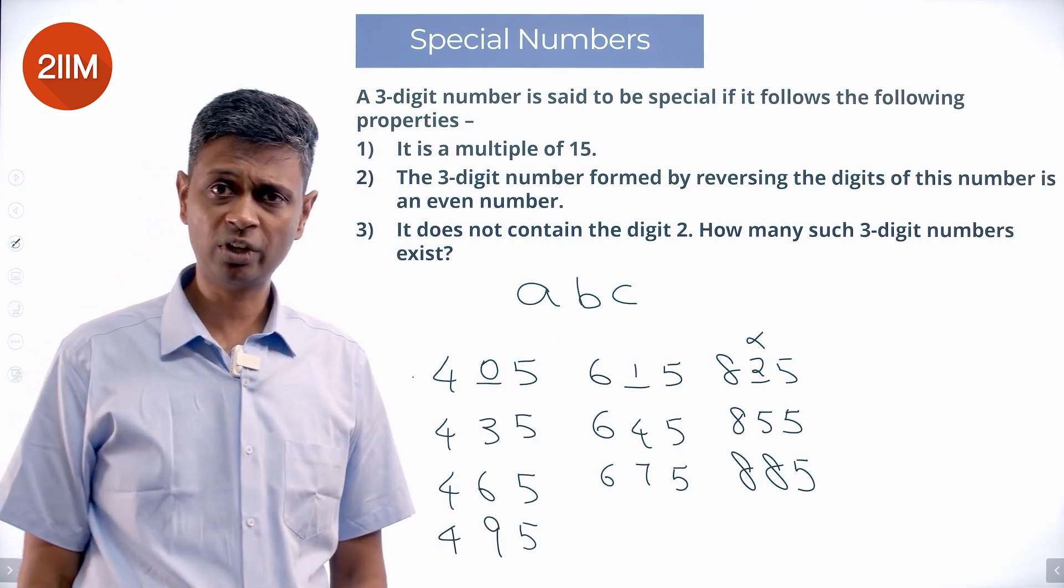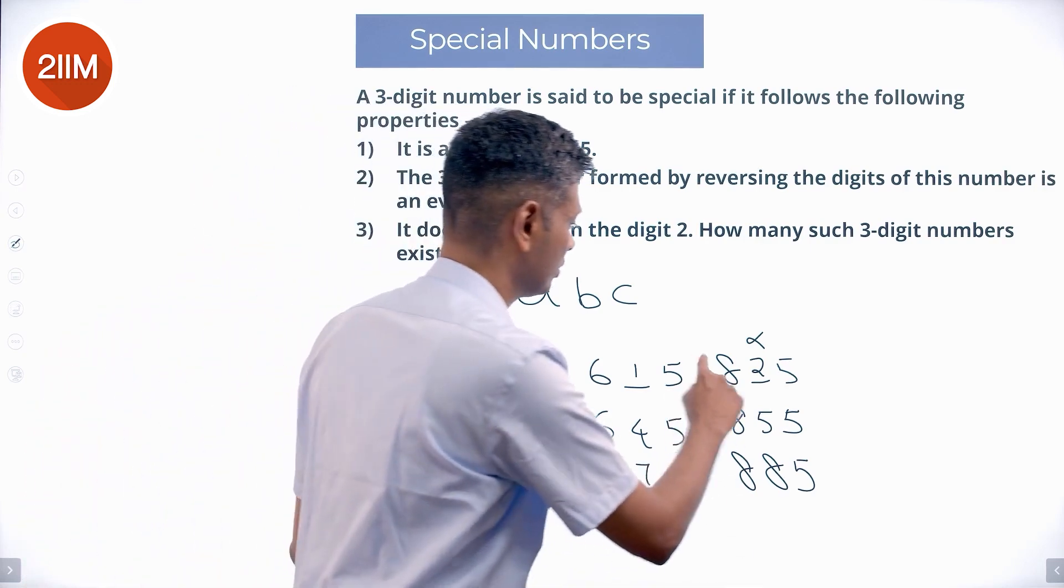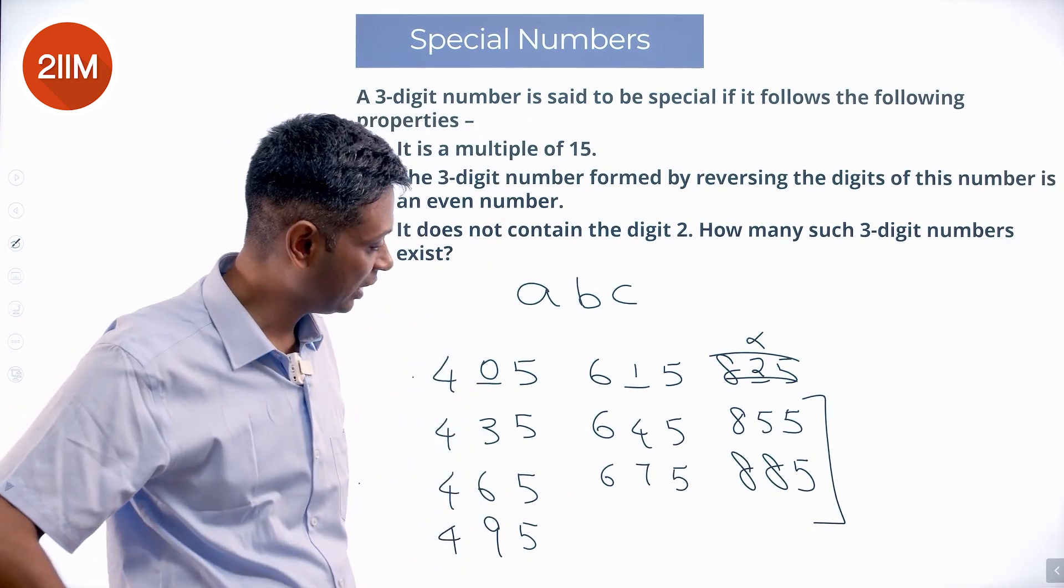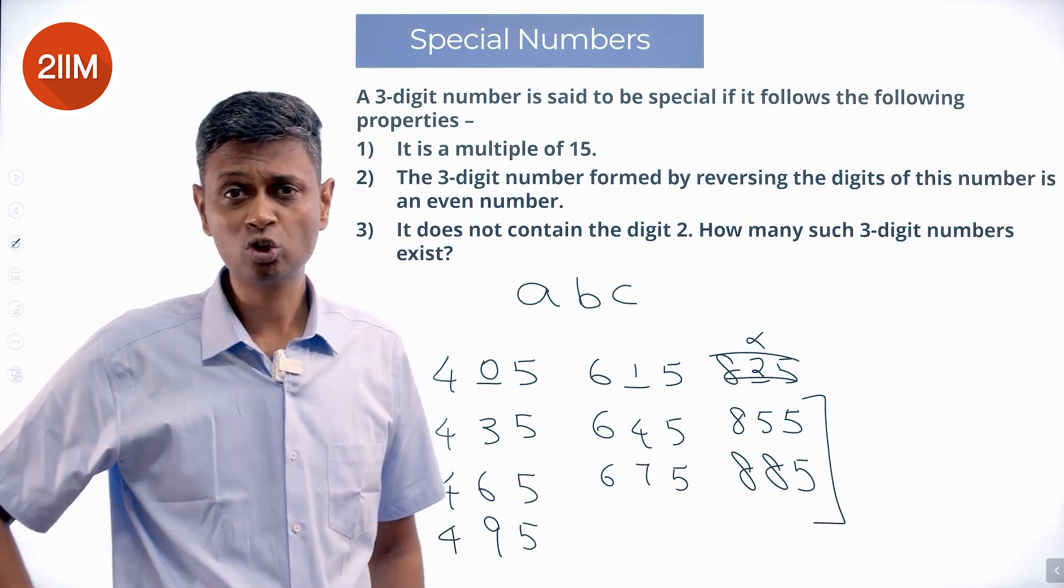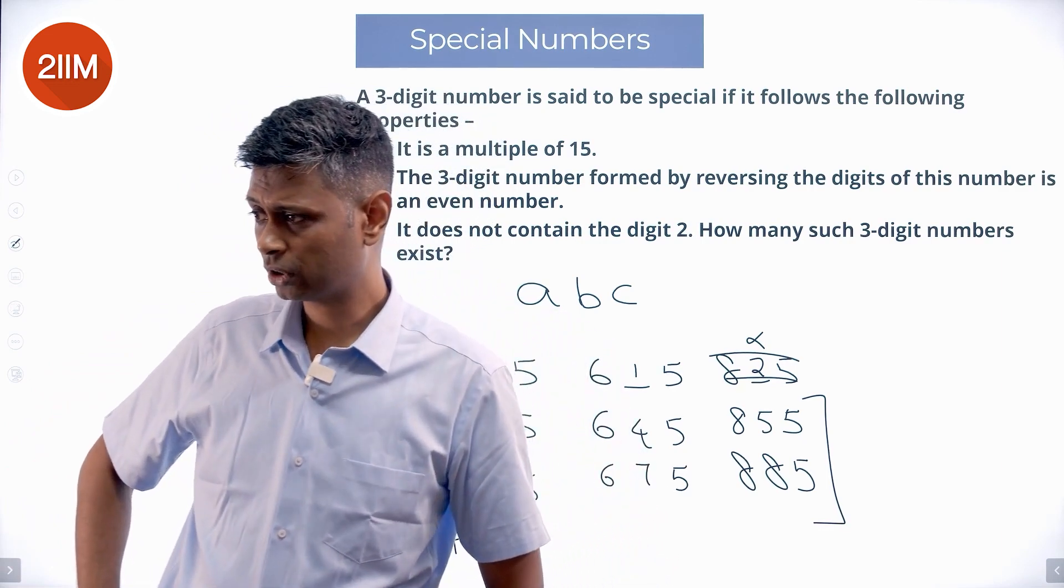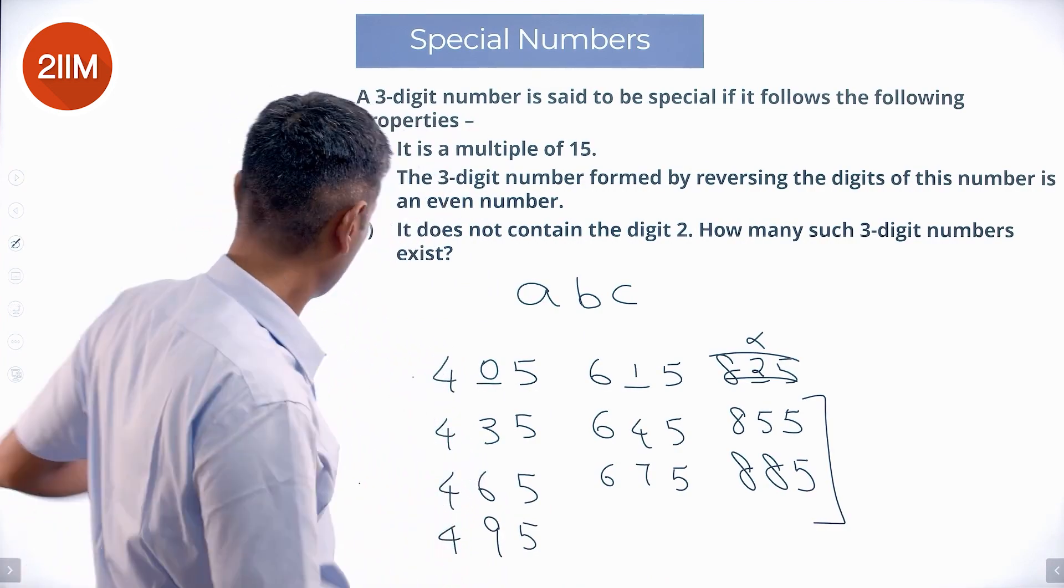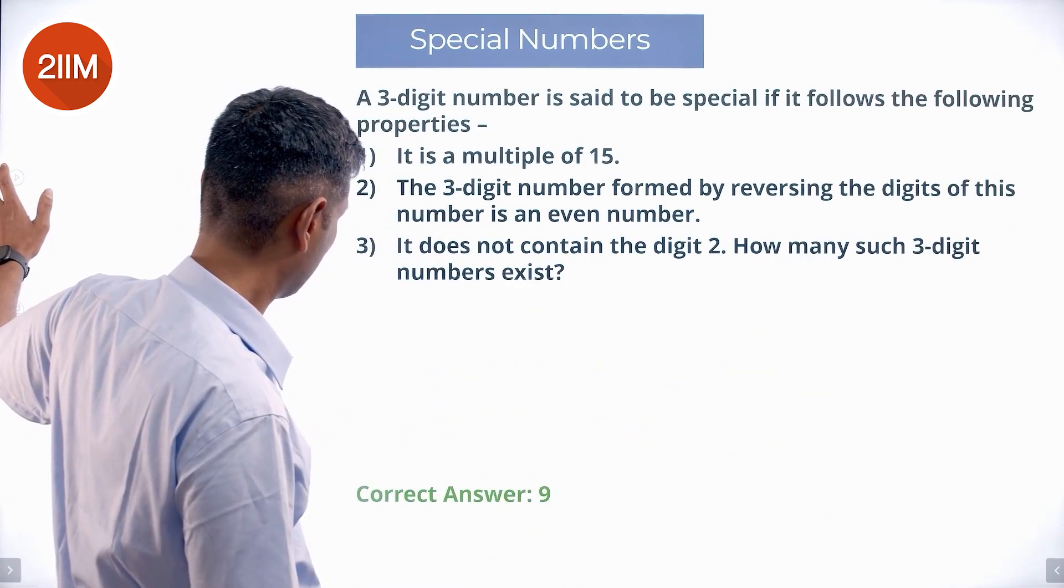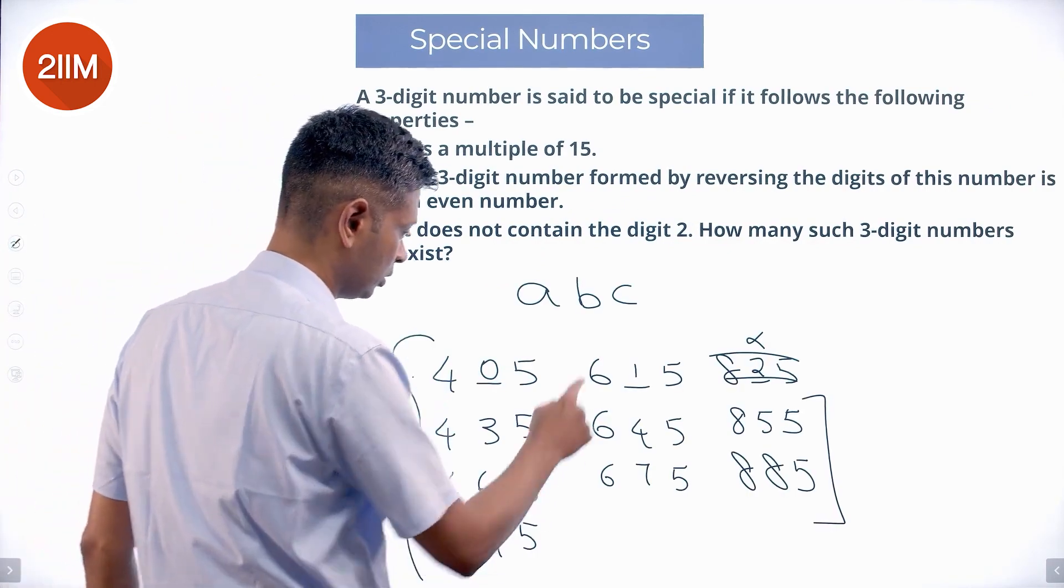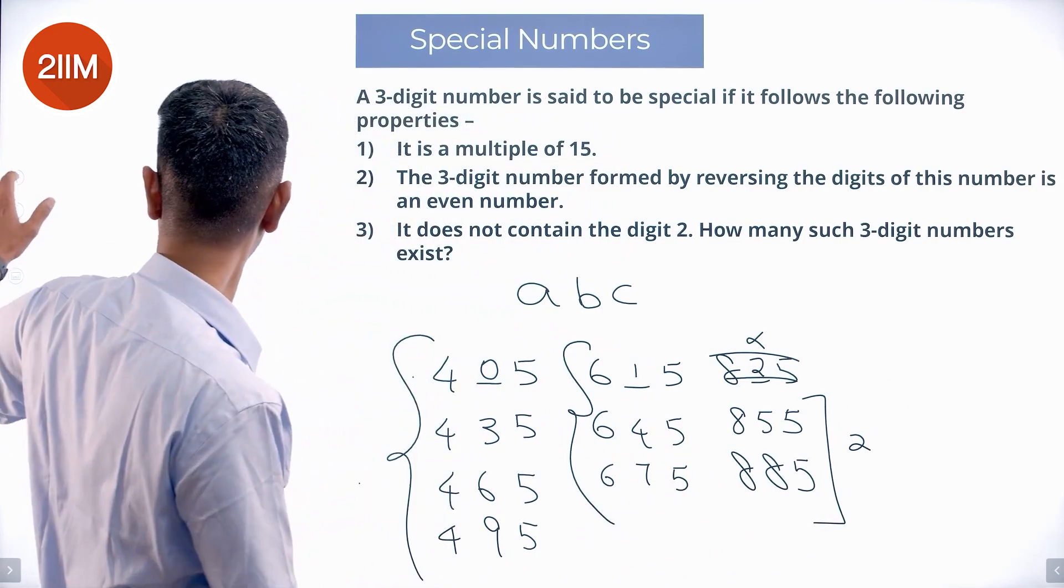So 4-0-5, 4-3-5, 4-6-5, 4-9-5. 6-1-5, 6-4-5, 6-7-5. 8-5-5, 8-8-5. 8-5-5 is a multiple of 3. 8-8-5 is a multiple of 3. So all of these numbers work. How many numbers are there? 4 plus 3 plus 2, 9 numbers. 4 of these, 3 of these, 2 of these. 4 plus 3 plus 2, 9 different numbers work.